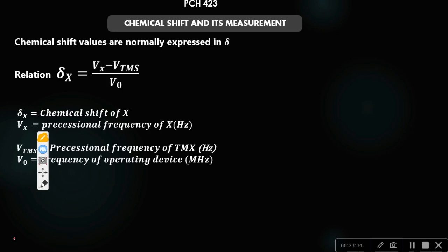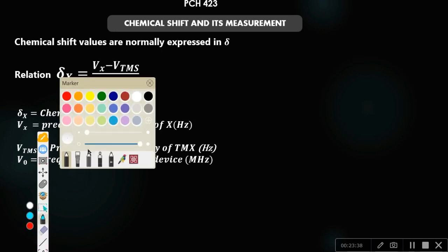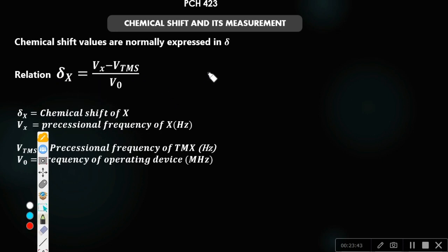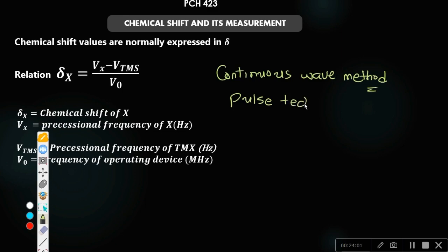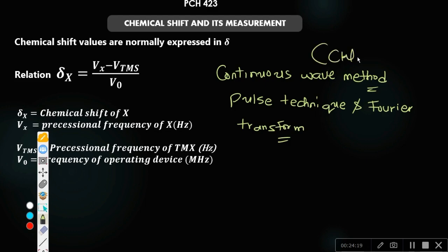There are two methods used for measuring chemical shift. The first is the continuous wave method — also called continuous wave NMR. The second is the pulse technique with Fourier transform — also called FT-NMR. You should read about both of these methods.